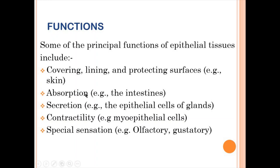The functions of epithelial tissue include: covering, lining, and protecting surfaces — for example, the skin — covering both internal and external body surfaces. Secondly, absorption — epithelial cells in the intestines are involved in absorption. Thirdly, excretion — the epithelial cells of glands are involved in excretion. Fourth, contractility — myoepithelial cells found in glands are involved in contractility.